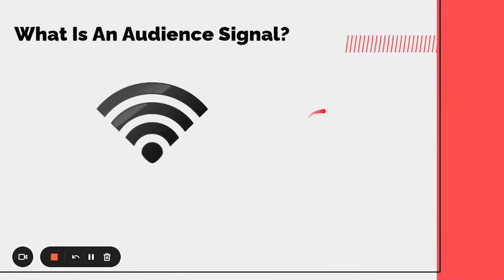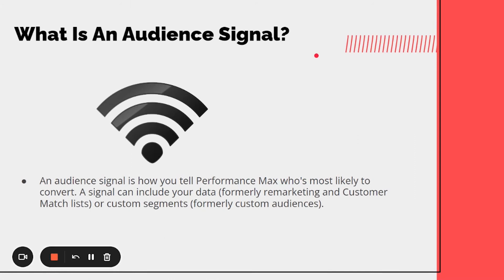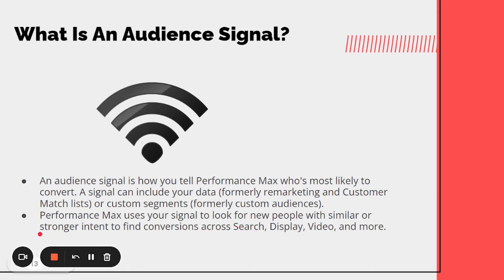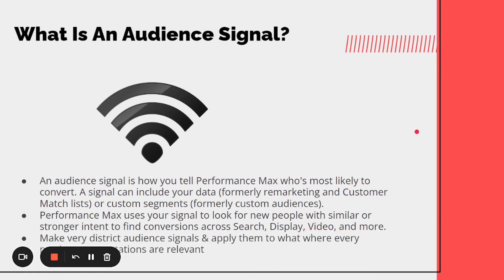Now a deep dive into audience signals. An audience signal is basically telling Performance Max who you know is your customer — cutting the learning phase. It's not going to be strictly targeting only the people you give it, but it gives Google a good idea of who to go for first, speeding up the learning curve and giving it stronger intent to find more sales across search, display, and video. You also want to test very distinct audience signals — like all converters versus a competitor's signal — and make them very different so you can segment your data.